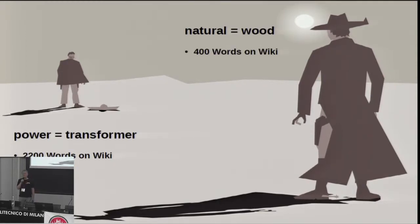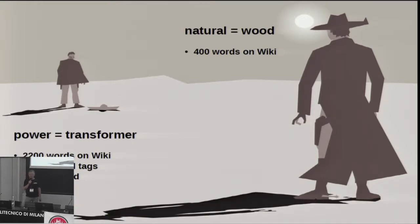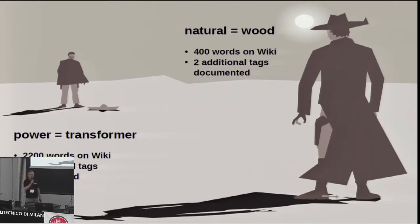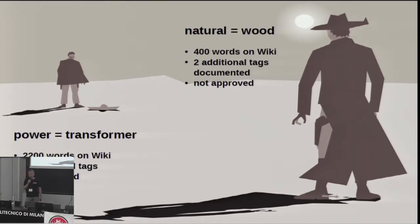There are only 400 words for natural equals wood. There are seven additional tags documented that you can use to further describe exactly what kind of transformer you're looking at, but only two additional tags documented on the wiki page for natural equals wood. Power transformer has even gone through a voting process and is an approved tag, whereas natural equals wood has never been voted on — it's a rogue tag, not approved, just being used by some people.